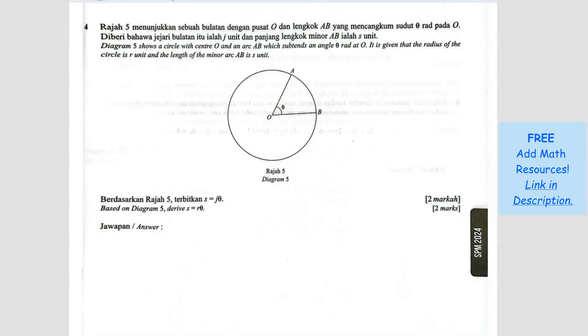Question number 4. Based on diagram 5, derive S equals R theta. So they want us to derive this. And what else they told us? Diagram 5 shows a circle with center O and arc AB with subtense and angle.